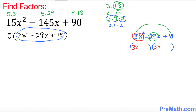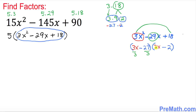Since the middle term is negative 29, both signs are going to be negative. So I put down negative 27 and negative 2. Now look at the first parenthesis: find the greatest common factor (GCF) of 3 and 27 — the biggest number that divides into both.